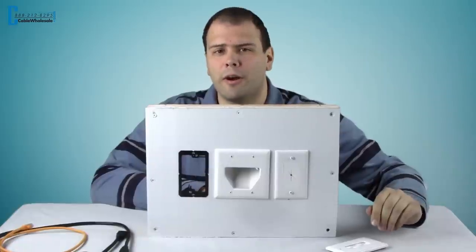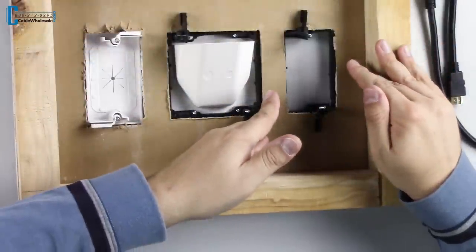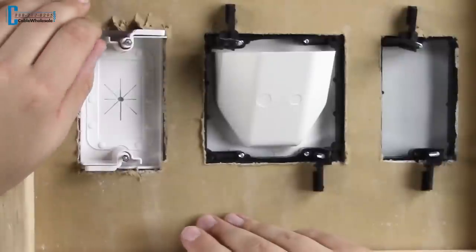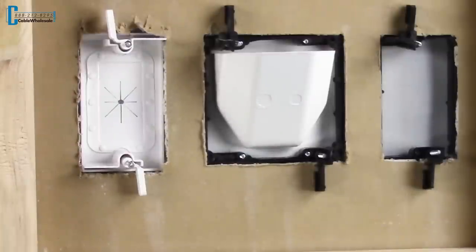We carry parts that require the installation of low voltage mounting brackets, but here we have a line of easy mount parts that have mounting wings that latch to the back of the drywall to provide a secure connection.